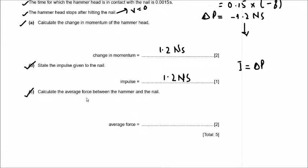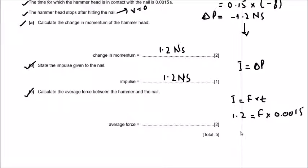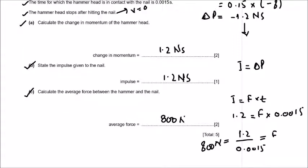Part c: calculate the average force between the hammer and the nail. Using impulse equals force times time: impulse is 1.2 Newton-seconds, and time is 0.0015 seconds. Rearranging for force: F equals 1.2 divided by 0.0015, which gives an average force of 800 Newtons.